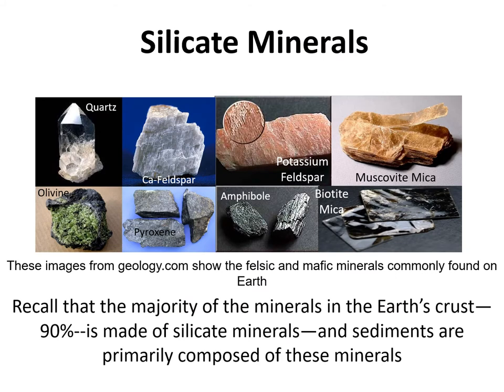The majority of minerals that exist on Earth's surface are silicates. We've already learned about the silicate minerals in the Bowen Reaction Series — we've got our light silicates or felsic minerals, and dark silicates or mafic minerals. In terms of sedimentary rocks, we not only have silicate minerals but also carbonate minerals that combine together to make different types of sedimentary rocks. About 90–95% of the Earth's crust is made of silicate minerals.